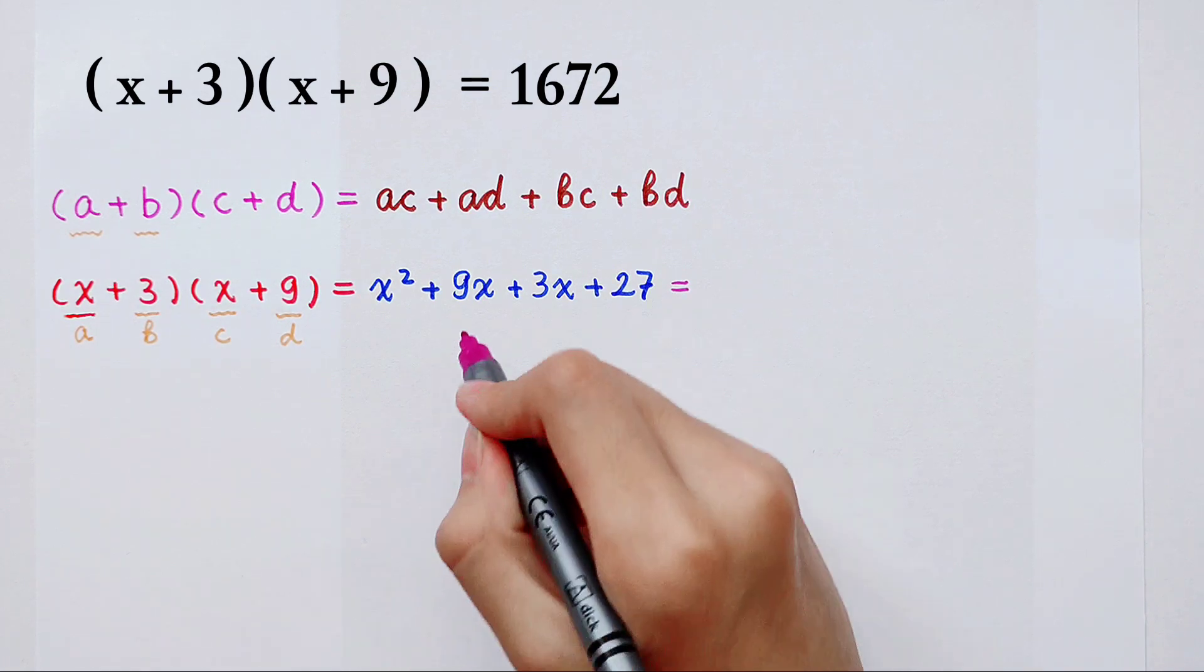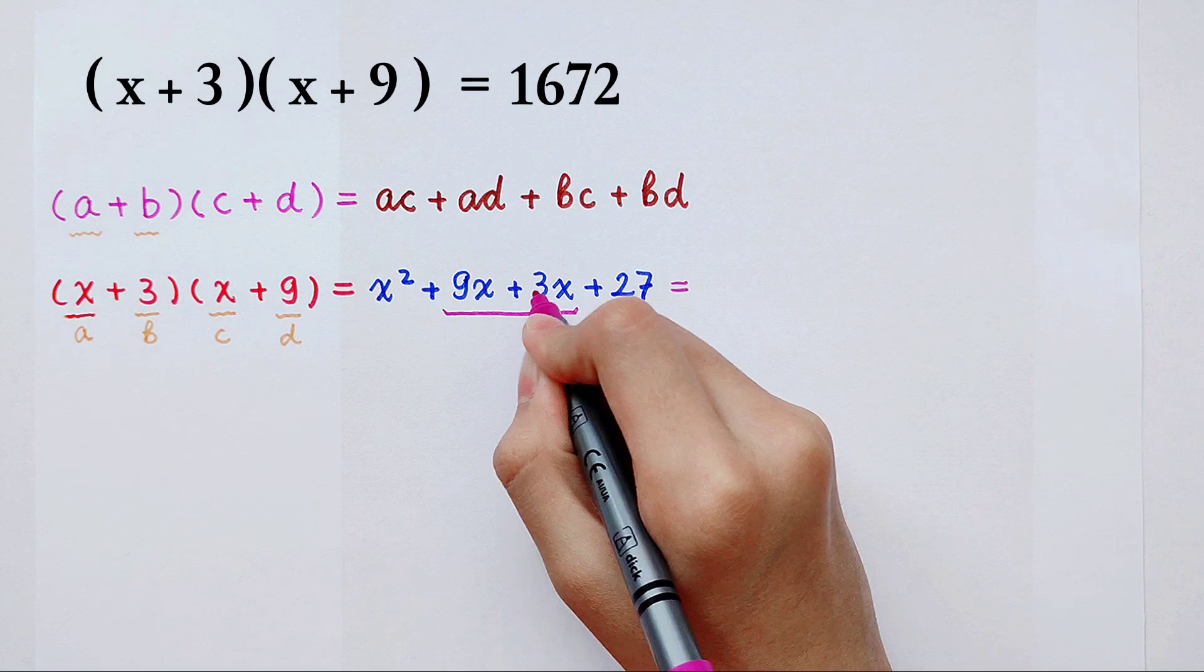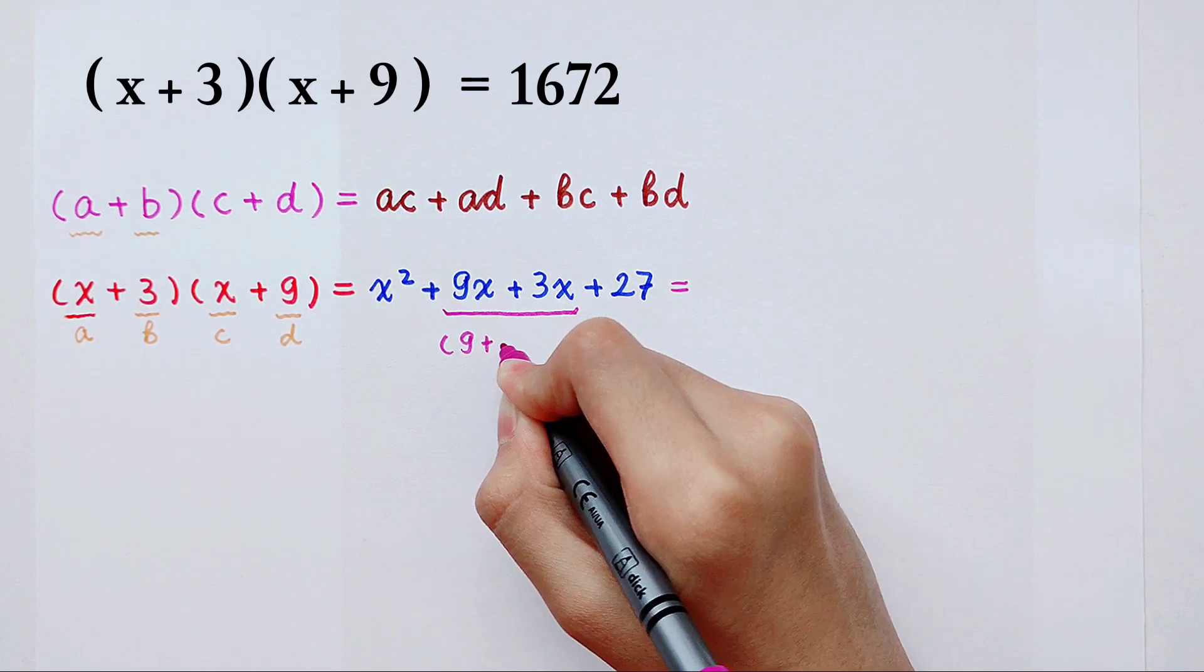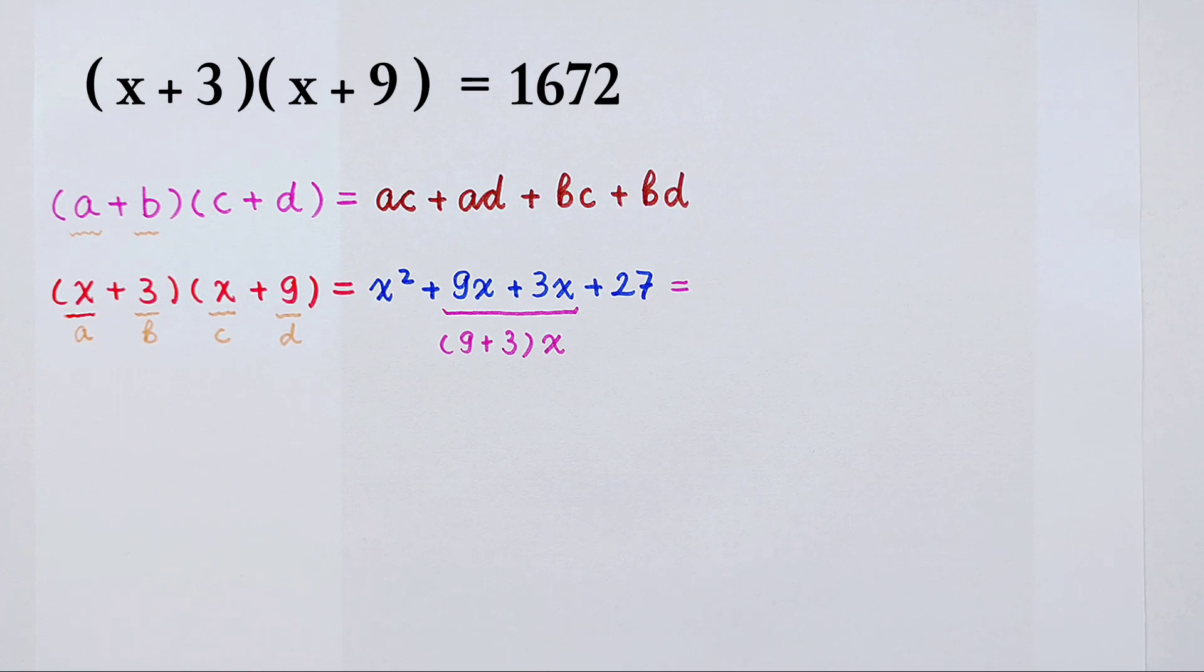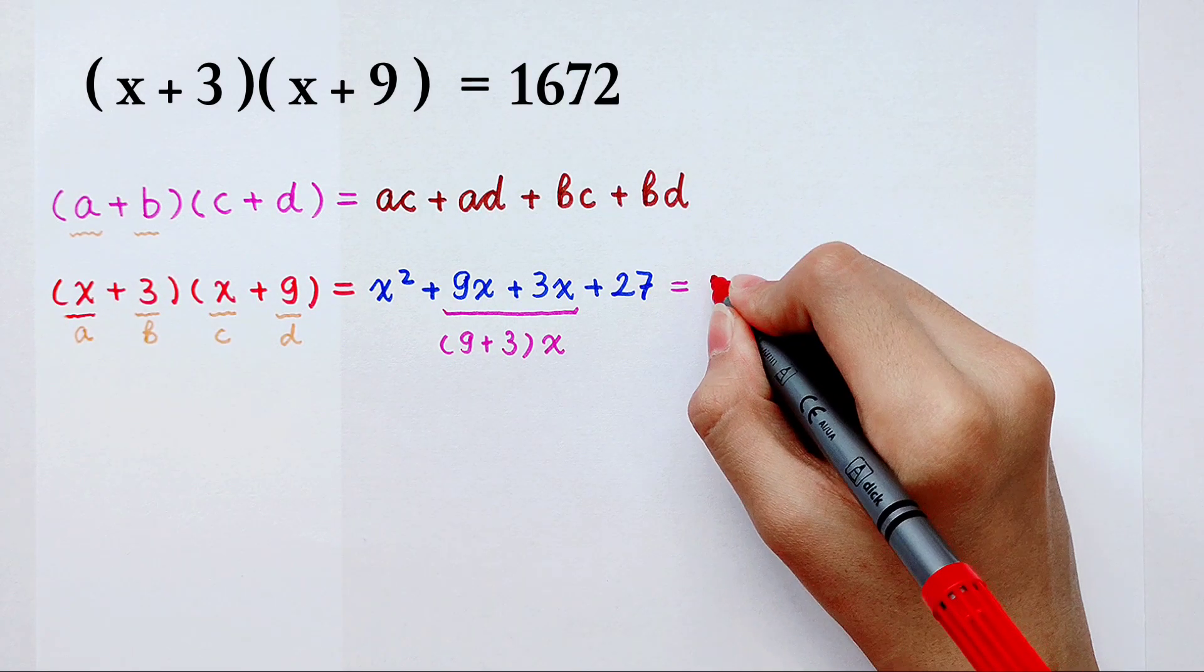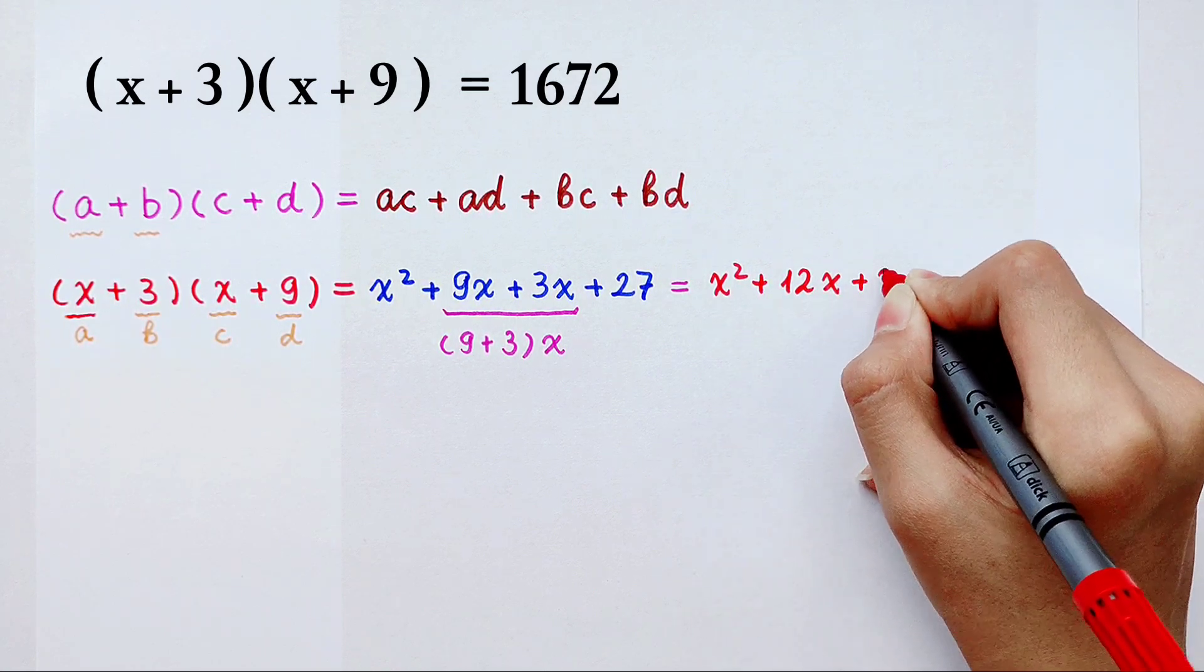x squared plus 9x then plus 3x. 9x plus 3x is 9 plus 3 then times x. 9 plus 3 is 12. So x squared then plus 12x then plus 27.